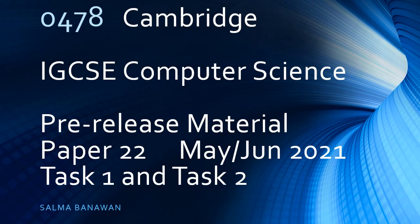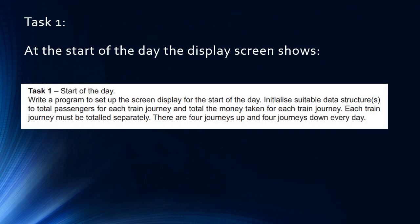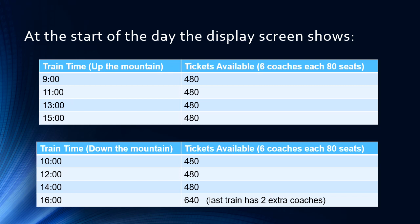Welcome to the 0478 Cambridge IGCSE pre-release material. We're going to revise Task 1 from the last video and go over Task 2. In Task 1, we set up the screen display for the start of the day for our train station. The setup screen shows the times trains go up the mountain: 9, 11, 13, and 15 o'clock, and down: 10, 12, 14, and 16 o'clock, along with the tickets available at each corresponding time.